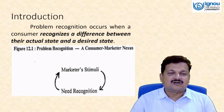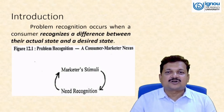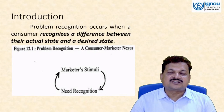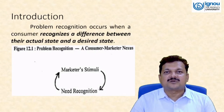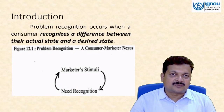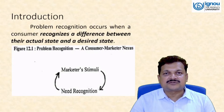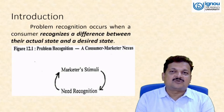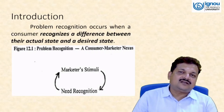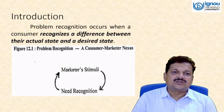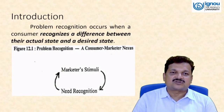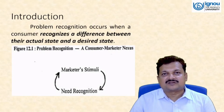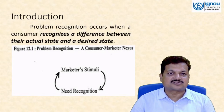Need recognition is a particular stage where we find shortages or discrepancies between what is not available with customers and what is available in the market. Problem recognition occurs when a consumer recognizes a difference between the actual state and the desired state. The actual state is what is present with you; the desired state is your expectation. When the difference is sufficient, that creates problem recognition, and then we go for information search.